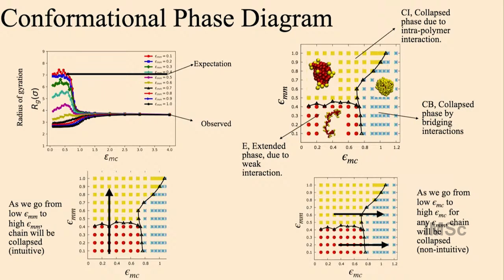What was non-intuitive was: if we sit at a low epsilon_mm value and increase epsilon_mc, one would expect the polymer to remain extended or increase in Rg, since the monomer-crowder attraction is growing. But what we observed was that the Rg value was actually decreasing as we increased epsilon_mc. This happens because the crowder particles act as a kind of glue or bridge between two non-neighboring monomers, causing the chain to collapse. We call this the Cb phase — collapse due to bridging interaction.